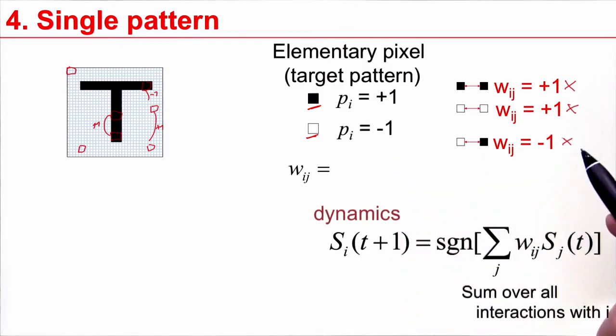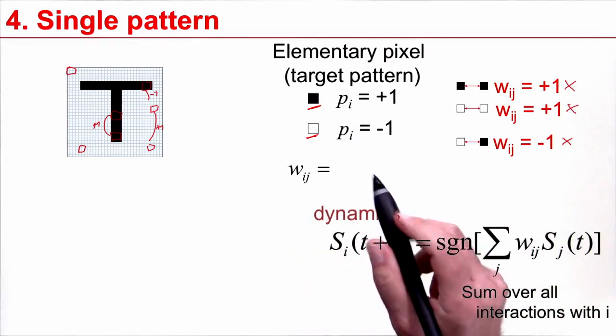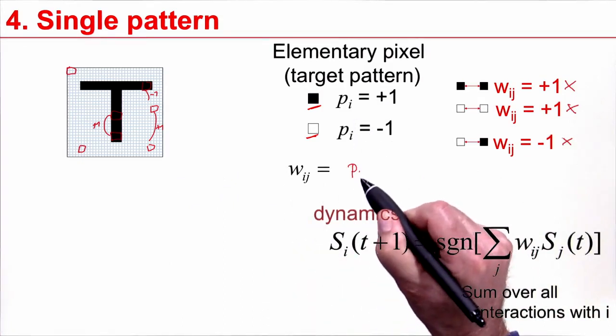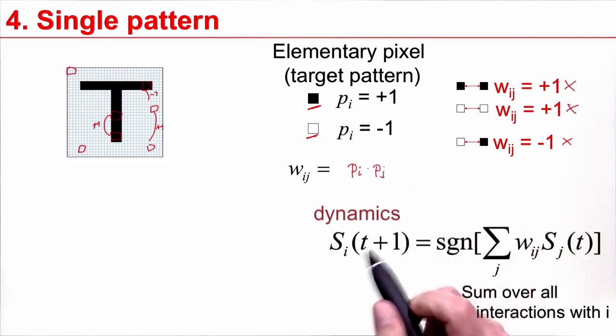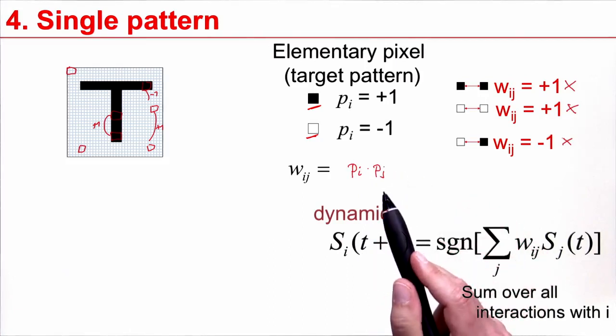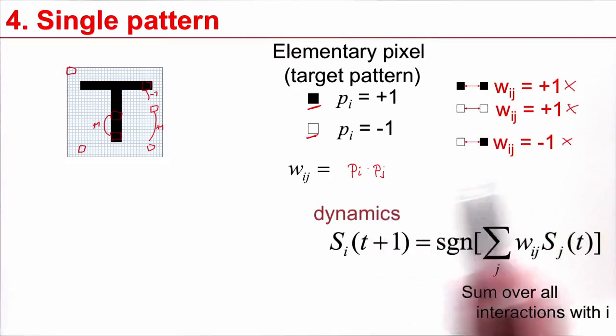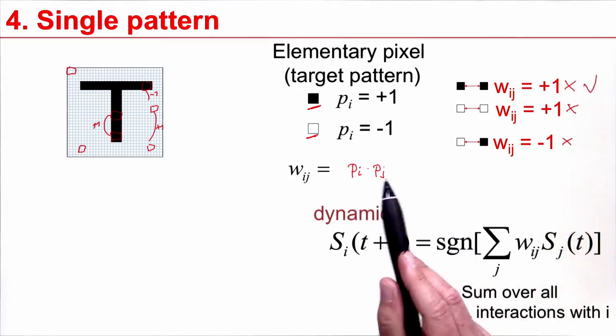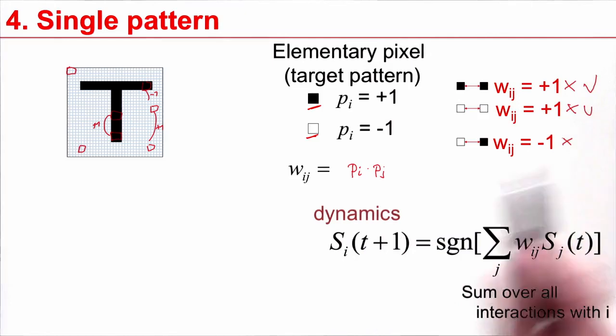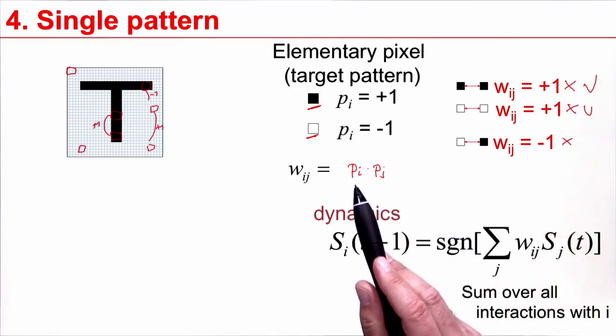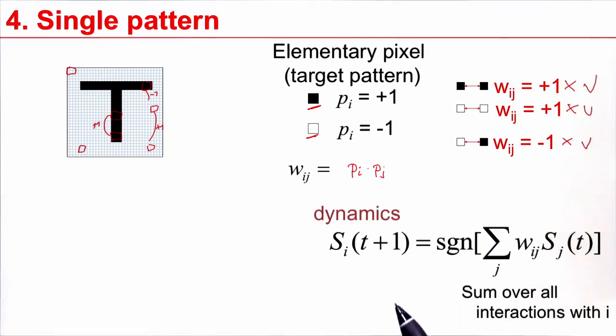Now something interesting happens. We had three different rules, but with this notation I can actually write it as pi times pj. Let's check: connection from black to black is plus one times plus one, positive weight. Connection white to white is minus one times minus one. White to black is minus one times one, negative weight. So instead of having three different separate rules, I now have one compact formula.